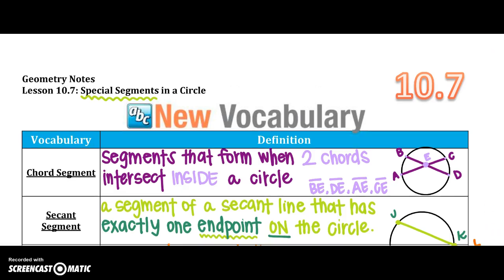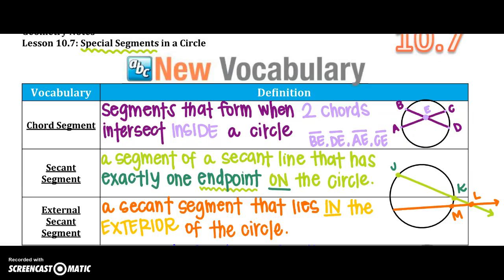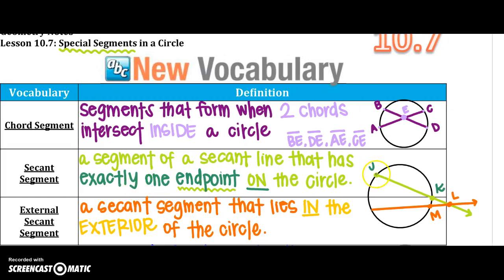A secant segment is a segment of a secant line that has exactly one endpoint on the circle. Remember, a secant segment has things outside the circle. So if I look over here, it kind of looks like a ray in which it has one endpoint, so one endpoint being J, and it continues to K through L. So my secant segment, I could name as JK ray, because J is the only endpoint of that segment. Everything else are just points on the ray.